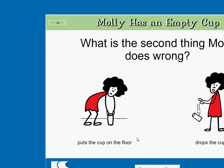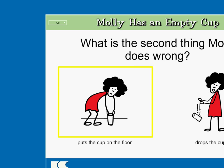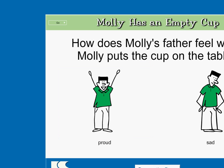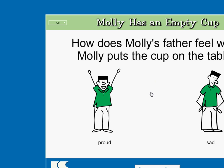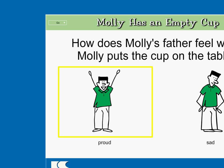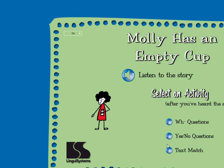What is the second thing Molly does wrong? Puts the cup on the floor. Drops the cup. Correct! How does Molly's father feel when Molly puts the cup on the table? Proud. Sad. Right on!